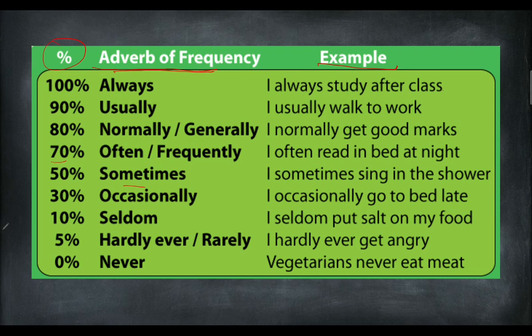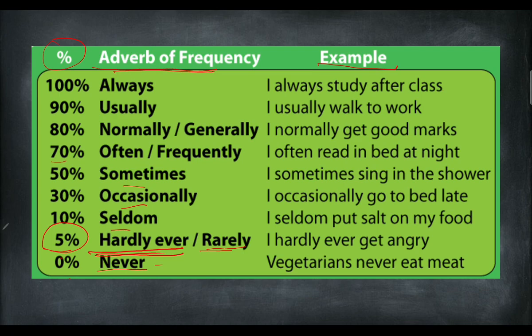'Sometimes' means kadang-kadang — only about 50%, sometimes you do it, sometimes you don't. 'Occasionally' means jarang-jarang. 'Seldom' is even less frequent. I want to draw your attention to 'hardly ever' — only 5%. Many students wrongly think 'hardly' means 'with force,' like 'I kick the ball hardly' — which is wrong. 'Hardly' means almost tidak, hampir tidak. For example: 'I hardly ever get angry' — saya hampir tak pernah marah. Similarly, 'rarely' means very rare, and 'never' means tak pernah langsung.